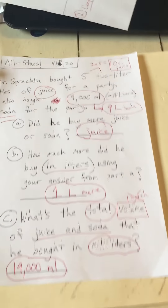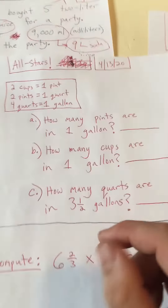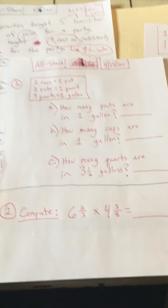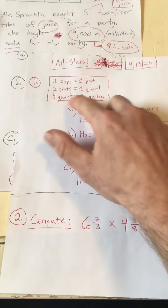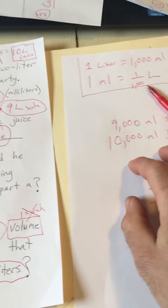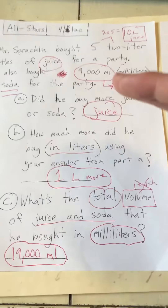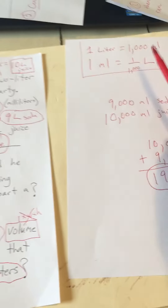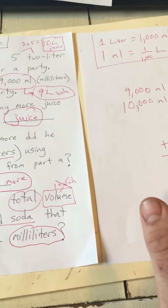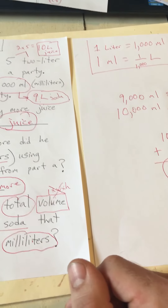You'll notice that for tomorrow's problem I told you that two cups is a pint, two pints is a quart, and four quarts are in a gallon — I told you that because on MCAS they're going to tell you that. But they are not going to tell you how many milliliters are in a liter; that is something you are expected to know at this age. Jacob got this one right — he knew that one liter was a thousand milliliters.